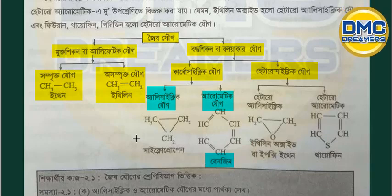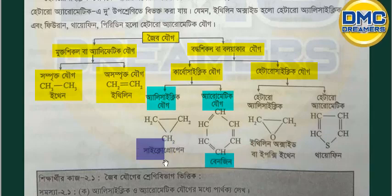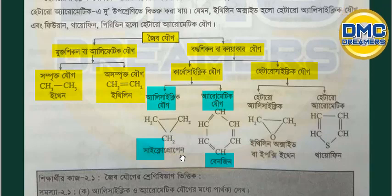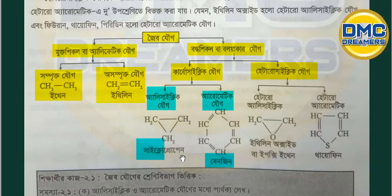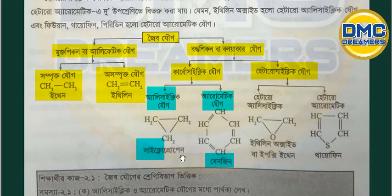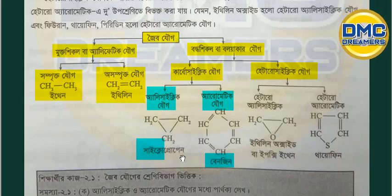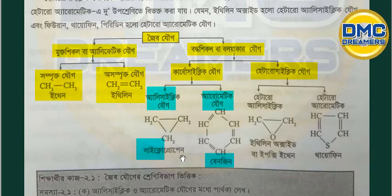Alicyclic compounds are the same as cycloalkanes. Examples of alicyclic compounds include cyclopropane, cyclobutane, cyclohexane, and cycloheptane. If you want cycloalkane-type structures, you will use alicyclic classification. We will keep this in mind.